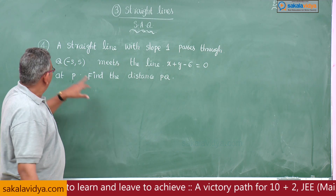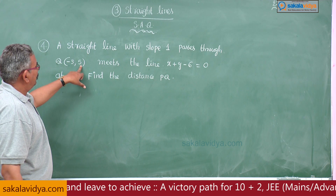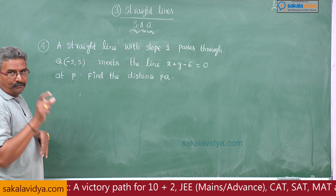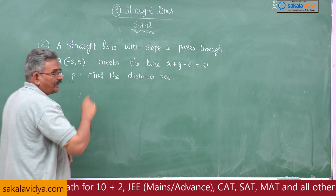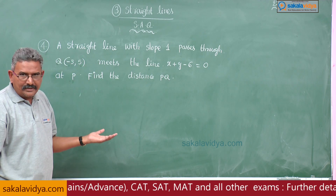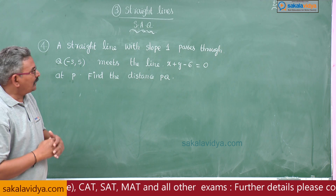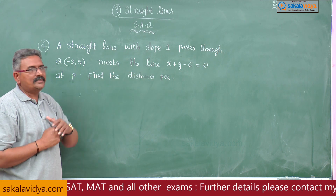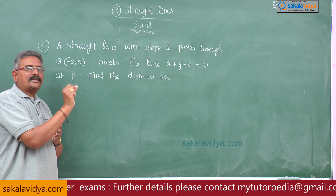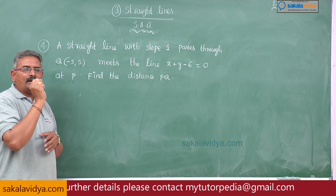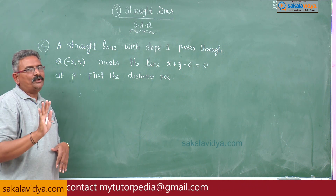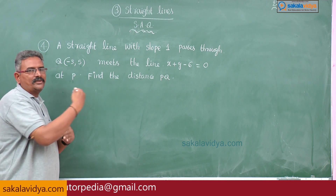What is x1 comma y1? That is the given point. What is r? We do not know — r is nothing but PQ, the distance between P and Q. After finding the P coordinates, P lies on x plus y minus 6 equals 0. Substituting that point into x plus y minus 6 equals 0, we get r, which is our required distance PQ.